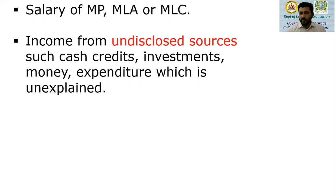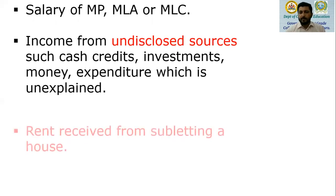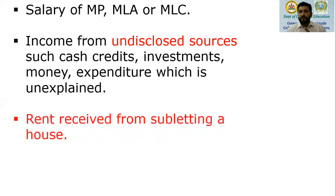Sometimes, income from undisclosed sources such as unexplained cash credits, investments, money, or expenditure which is unexplained — if these are not shown as business income, then such incomes will be shown under the head other sources. These are called unexplained money, unexplained cash credit, unexplained expenditure, and unexplained investments from undisclosed sources, taxable under other sources if not shown under business income.